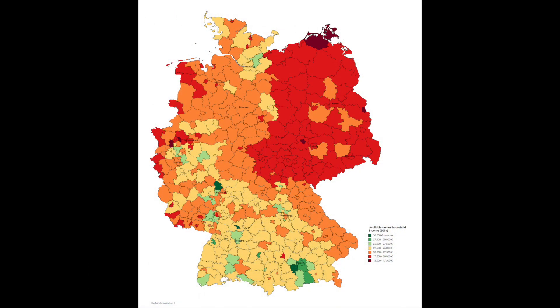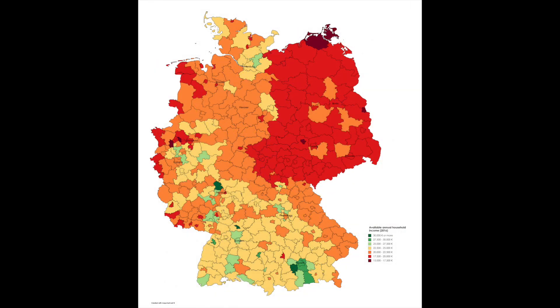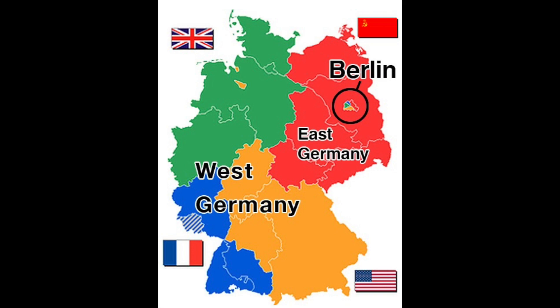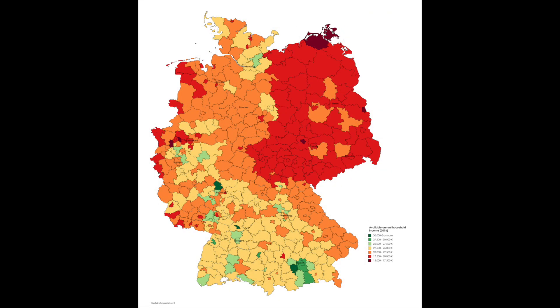This map shows us the available annual household income of families in Germany. This really still shows the historical lines of World War II between Eastern and Western Germany — the income disparity between the two regions is still fairly obvious. The wealthiest area is down south, it looks like in Munich.